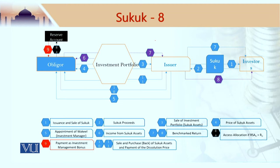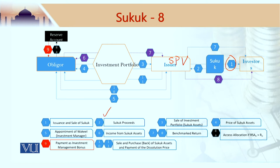Let us look at this structure, which seems quite complicated like sukuk al istisna. We will go through the detail with the help of numbered steps. Step number 1 is the issuance and sale of sukuk: the issuer, which is the SPV, issues and sells sukuk to investors, and receives the sukuk proceeds — the price of the sukuk.